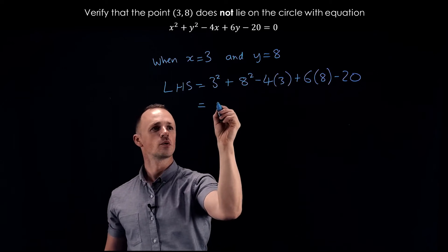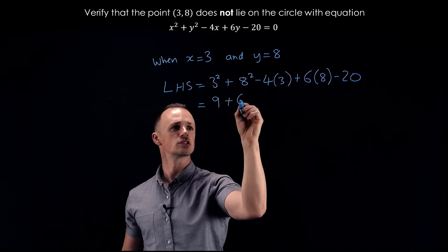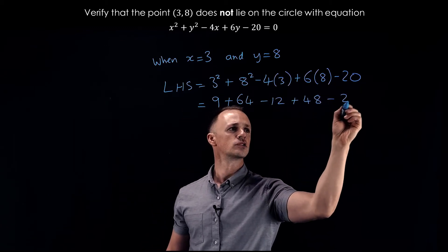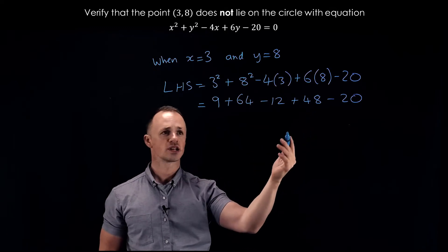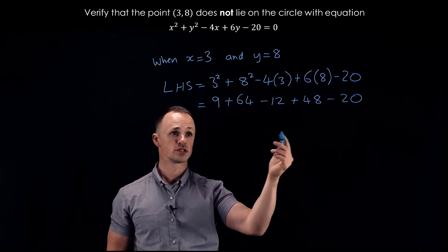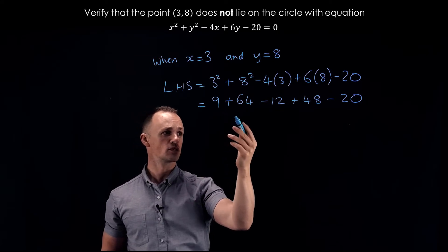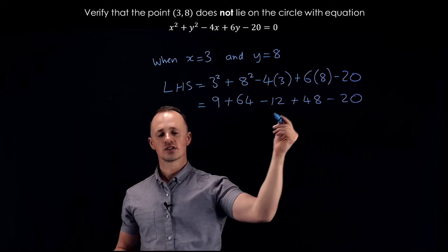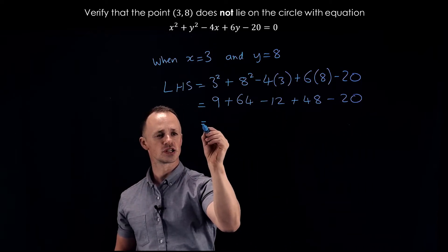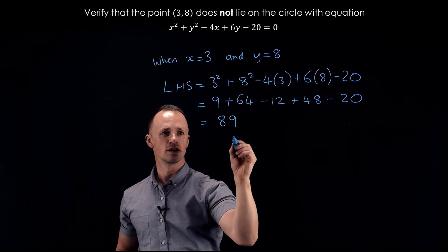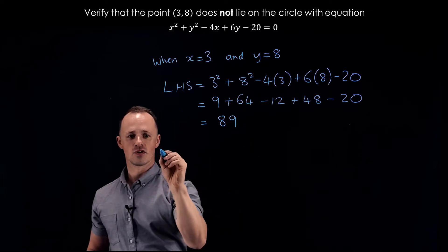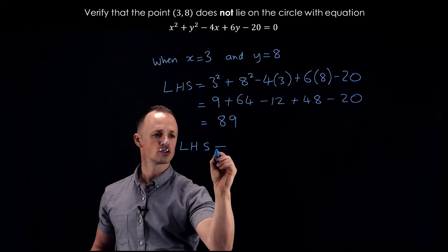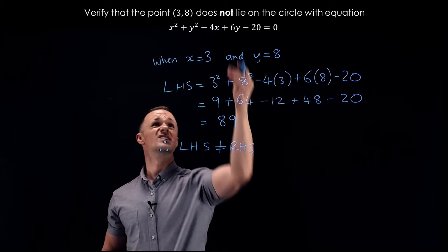Let's simplify this. We get 9 plus 64 minus 12 plus 48 minus 20. 64 plus 9 gives us 73, 48 minus 12 is 36, minus 20 is 16, so we're doing 73 plus 16, which gets us to 89.